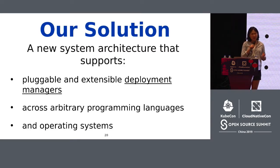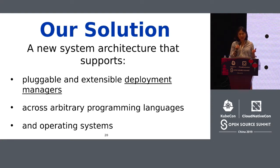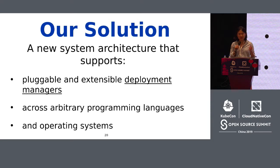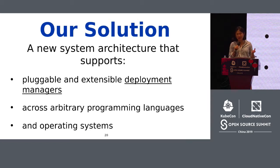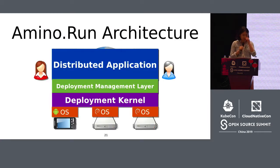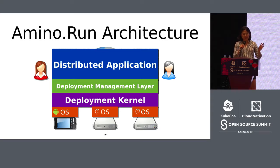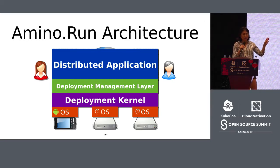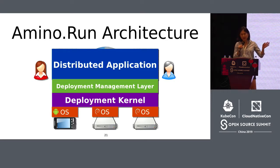What we came up with was the Amino Run system — a distributed operating system that supports pluggable deployment managers, which extend the functionality of the distributed operating system in various ways. The best way to understand how Amino Run works is by looking at its architecture. There are three layers: at the top is the distributed application — the application code that runs across all your mobile devices, IoT devices, and cloud servers.